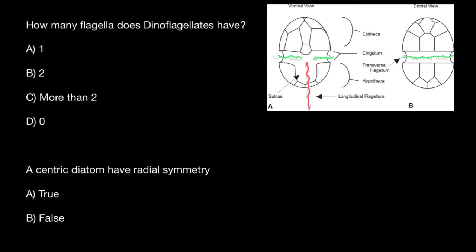So as you see, the correct answer is answer B. Dinoflagellates has two flagella. And second statement, a centric diatom has radial symmetry. Is it true or false?